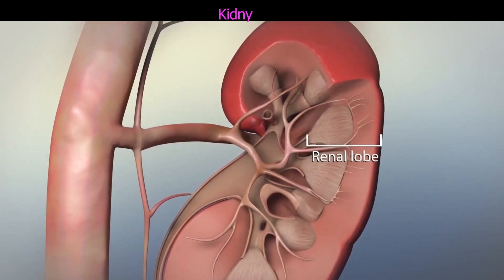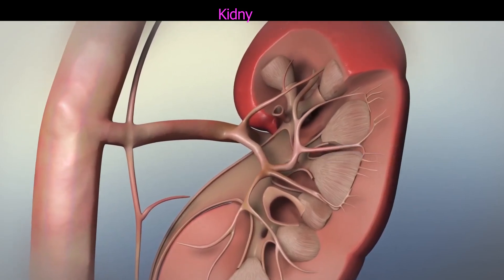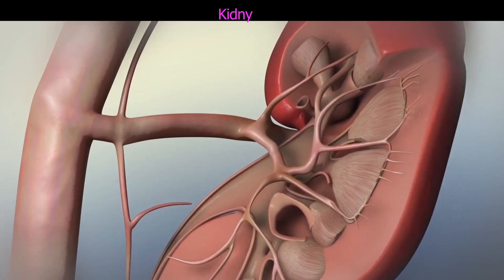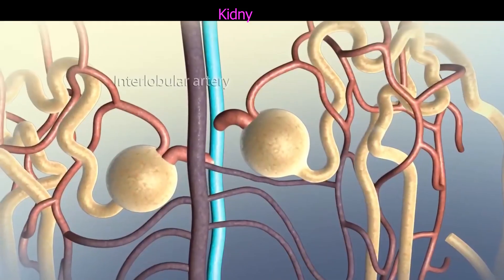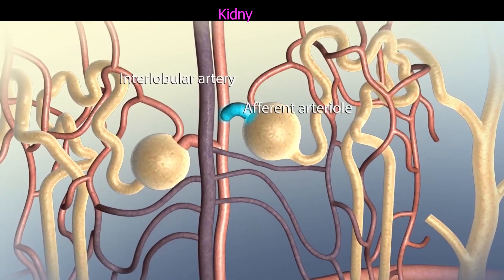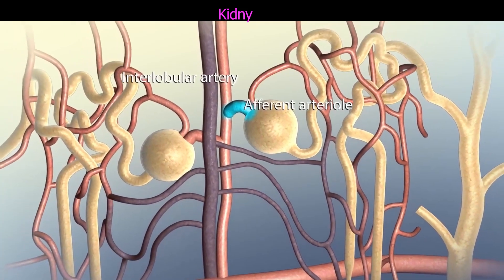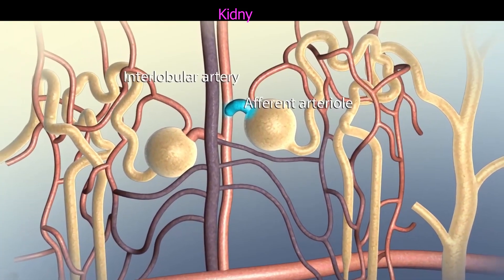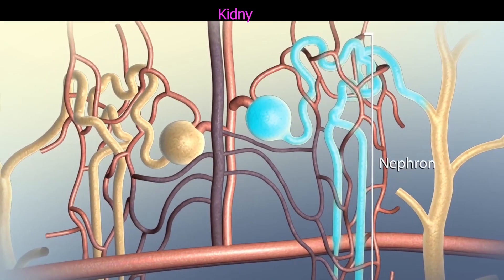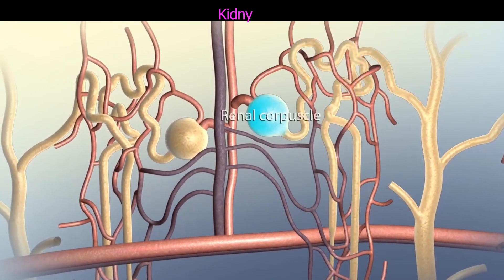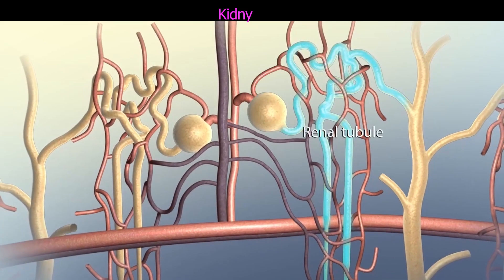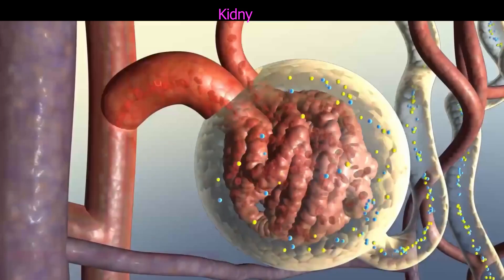The smallest branches of the renal artery, called afferent arterioles, supply the excretory components of the kidney called nephrons. Each nephron consists of a renal corpuscle and a renal tubule. The first step of urine production, called glomerular filtration, occurs in the renal corpuscle. It consists of a network of capillaries called the glomerulus and Bowman's capsule.